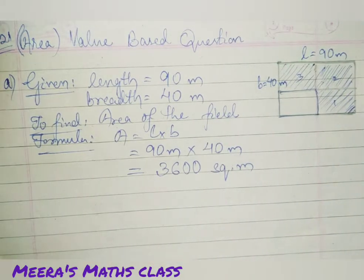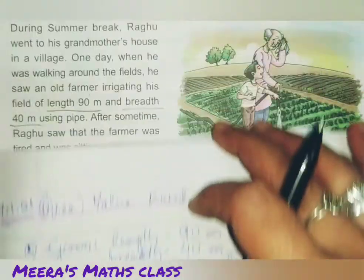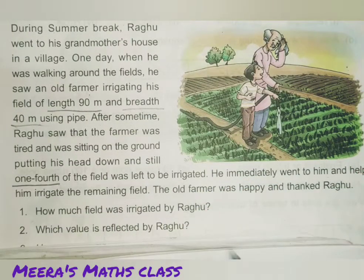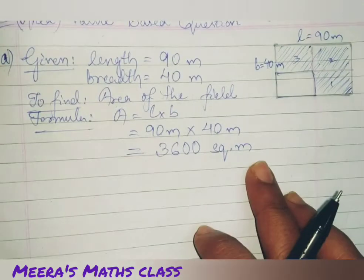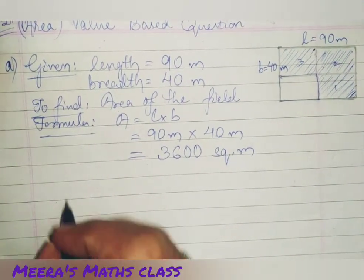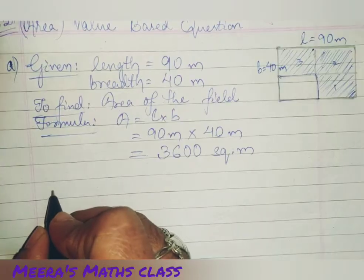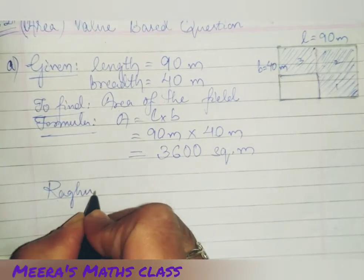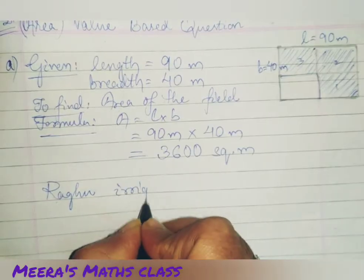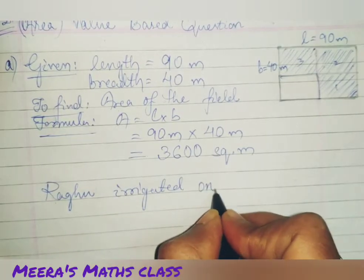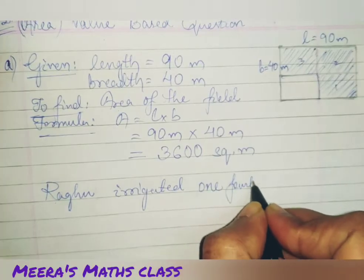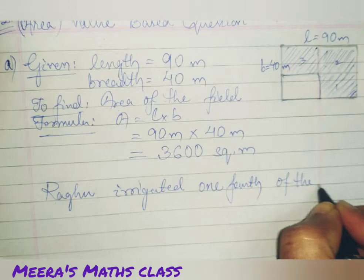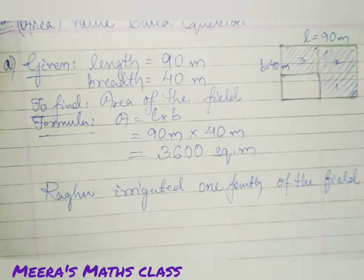But, you see, what is asked in the question, you have to find out. What is asked in the question? How much field was irrigated by Raghu? This is the total field. Now, Raghu irrigated one fourth of the field.